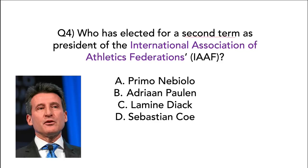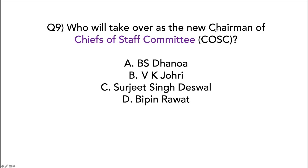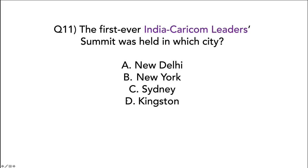Sebastian Coe has been elected for a second term as President of the International Association of Athletics Federations, headquartered in Monaco — he is British. The Economic Advisory Council to the Prime Minister has been reconstituted with Bibek Debroy remaining as Chairman. Bipin Rawat will take over as the new Chairman of the Chiefs of Staff Committee. The first ever India-CARICOM Leaders Summit was held in New York — CARICOM is a grouping of Caribbean countries.